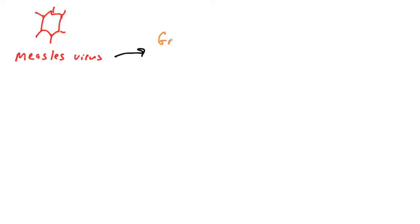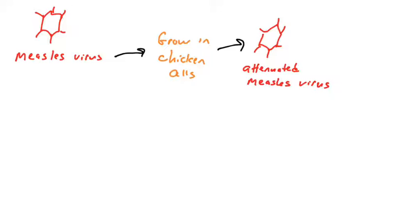As an example, the measles virus was isolated from a person, grown in the laboratory, and passaged with artificial selection — selecting for mutants that could grow well in chicken cells but no longer grew well in human cells. This attenuated measles virus, when given to humans, does not cause disease; it replicates poorly but replicates enough to generate a B cell and T cell response, giving an individual lifelong immunity in most cases.